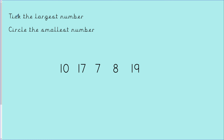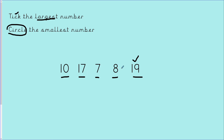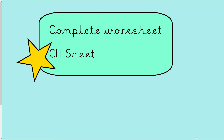Here it looks slightly different — it's asking me to tick the largest number. The numbers are 10, 17, 7, 8, 19. Which is my largest number? Excellent — 19. Put a tick. Now looking at the same numbers: 10, 17, 7, 8, 19. Which is my smallest number? Excellent — 7. Circle the smallest number. Well done.